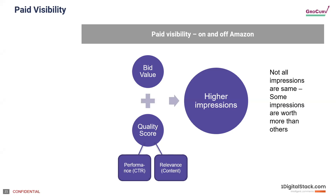Quality score is split into two parts: performance and relevance. Performance is click-through rate — if many people are clicking on an ad, that's good performance quality for Amazon. Relevance means even if people are clicking, if they're not converting — because the ad isn't relevant — that leads to customer dissatisfaction. For example, if someone sells hair brushes and bids on 'hair,' they might get impressions and clicks but no conversions, so the relevance isn't there. Amazon ultimately prioritizes ads that balance high bid value with strong quality score.